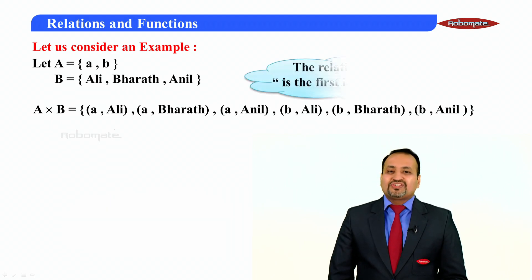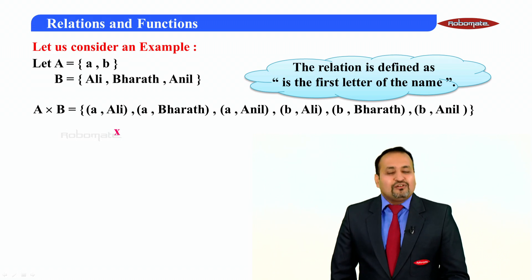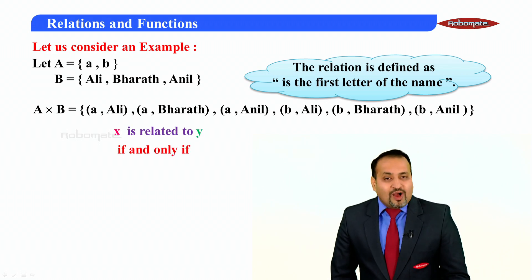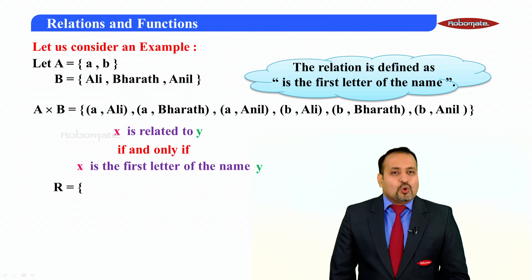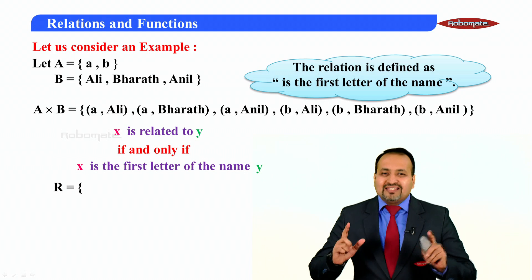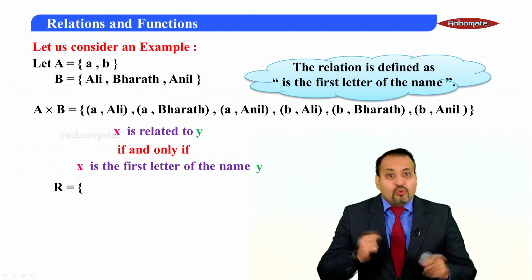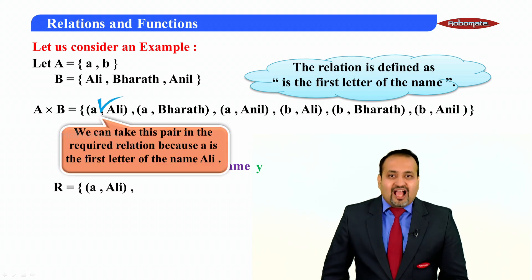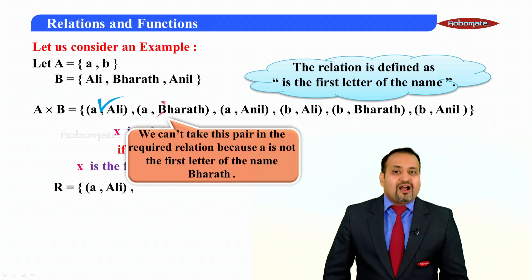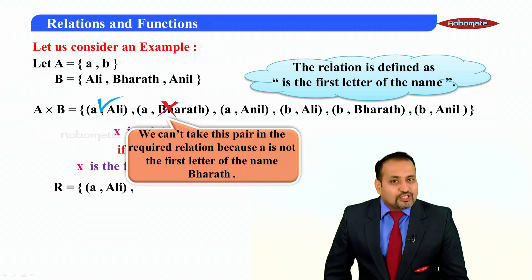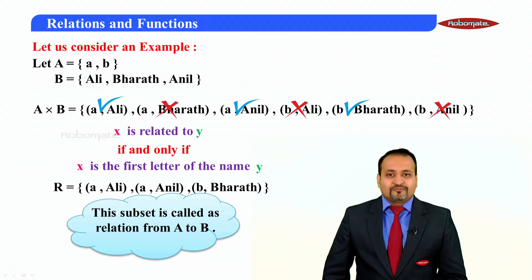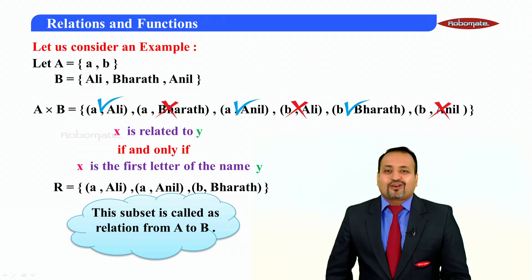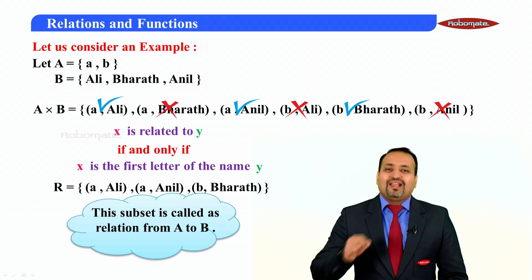Now the process of linking the elements is complete. The relation is defined as: x is related to y if and only if x is the first letter of the name y. Imposing this condition and selecting pairs: (a, Ali) — yes, a is the first letter of Ali. (a, Bharat) — no. (a, Anil) — yes. (b, Ali) — no. (b, Bharat) — yes. (b, Anil) — no. This subset of A cross B is called a relation from A to B.